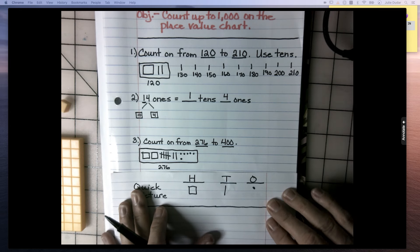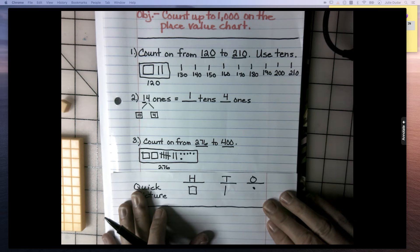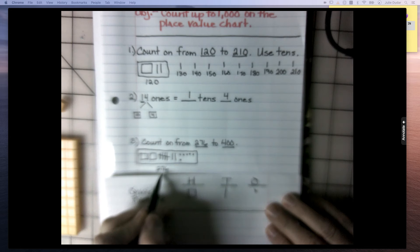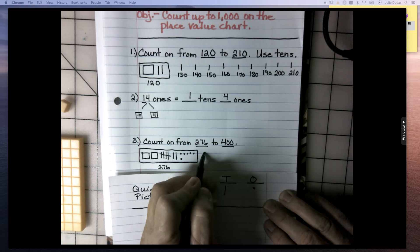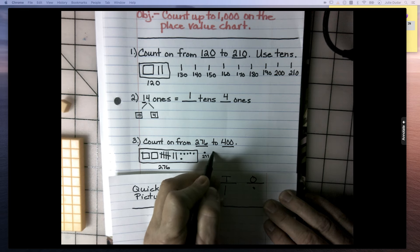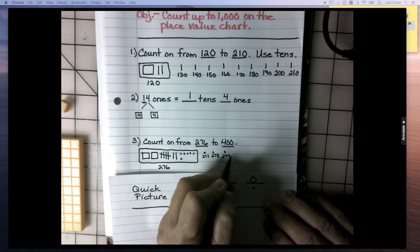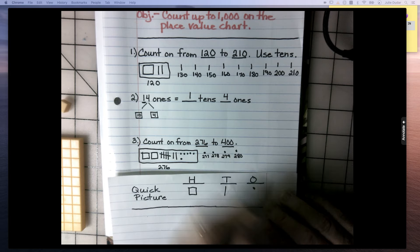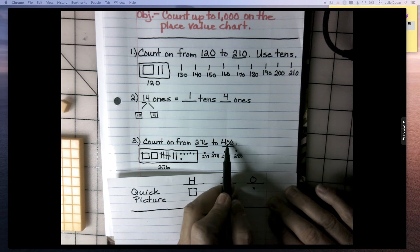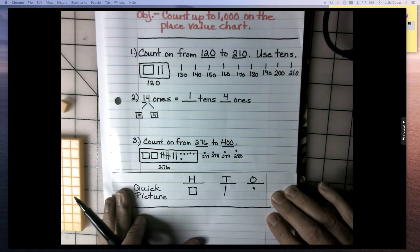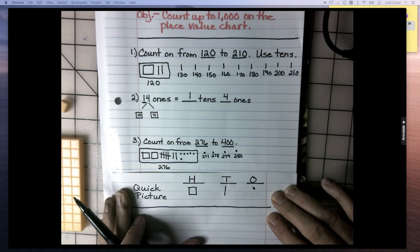And I'm thinking, again, I need to get to the benchmark number. So the next benchmark number that ends in a zero after 76 is 80. So I'm going to count on with ones until I get to 80. 277, 278, 279, and 280. That's a benchmark number. It's certainly easier to work with zeros. Now I need to go from 280 to 400. I want to get to the next benchmark number, which would be 300.